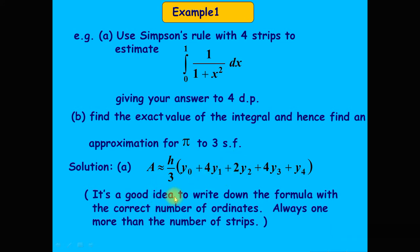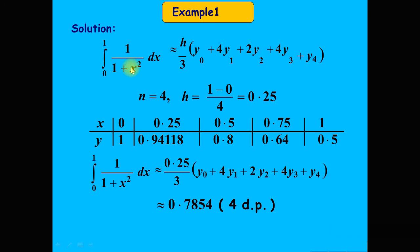It is good practice to write the formula with the correct number of ordinates — always one more than the number of steps. Since this problem requires integration for four steps, n equals 4. The step size h = (b − a)/4 = (1 − 0)/4 = 0.25.